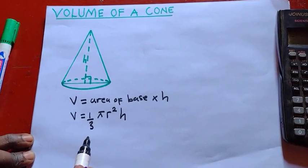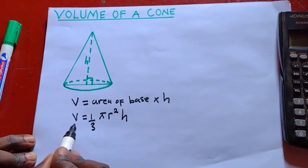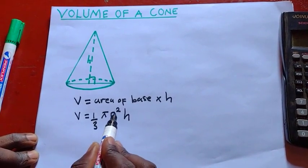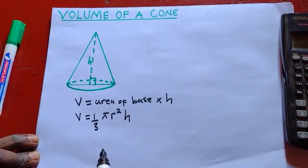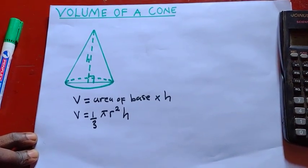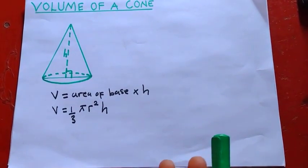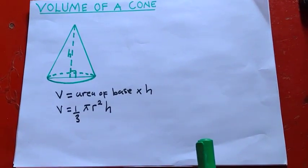This is the formula that you have to apply when you are finding the volume of the cone. So I hope that you have followed me nicely. So volume of the cone is given by the formula volume is equal to 1 over 3 π r squared h.